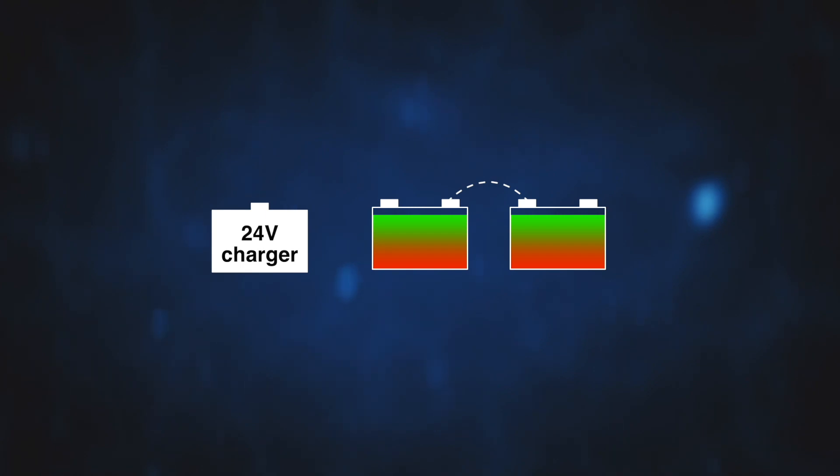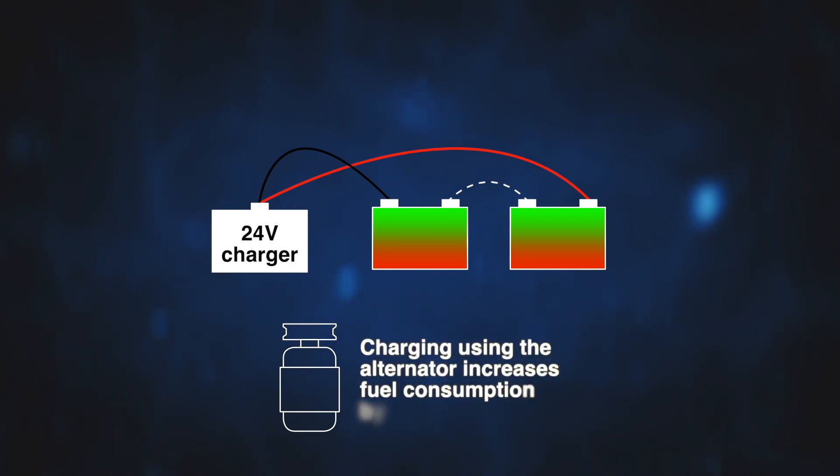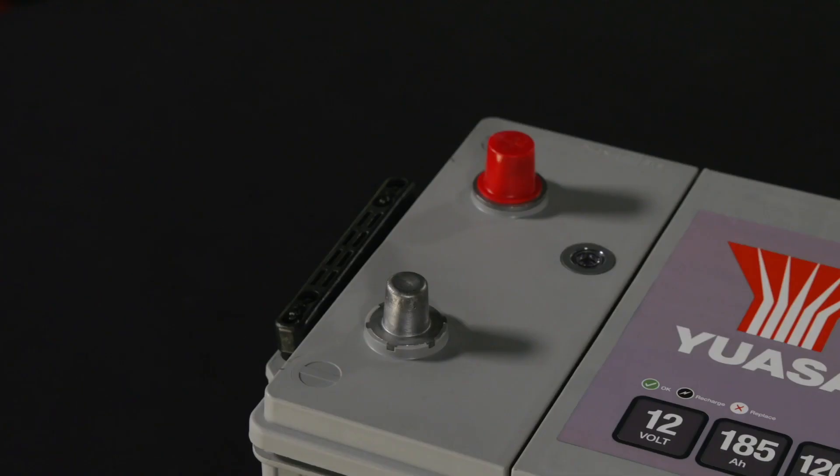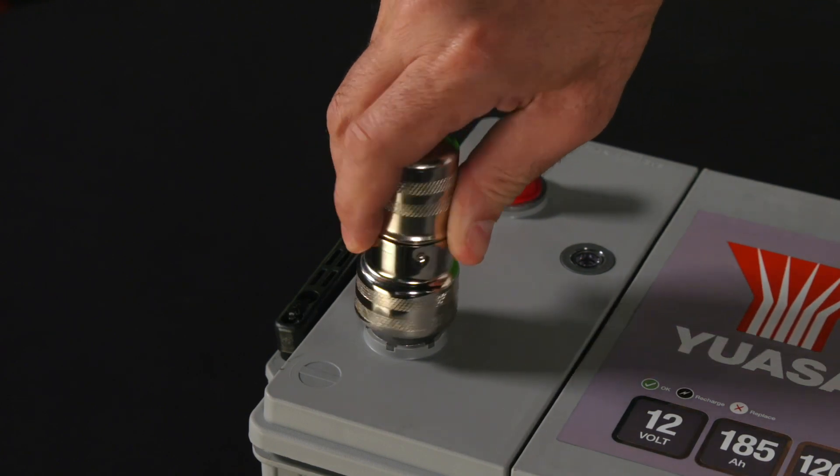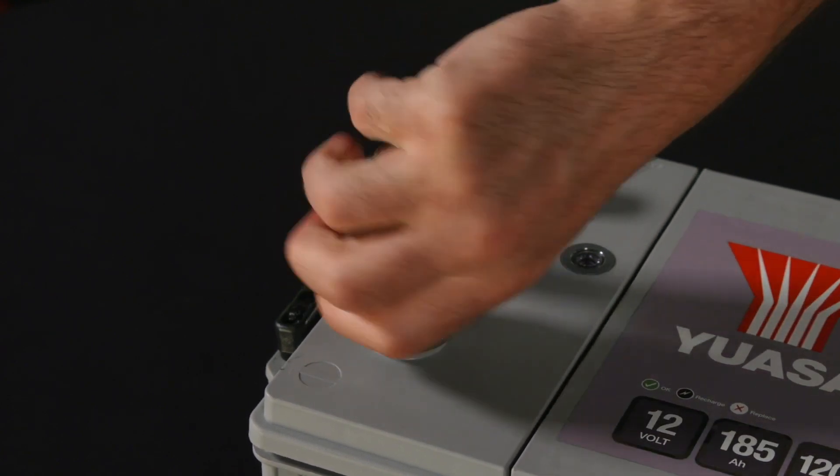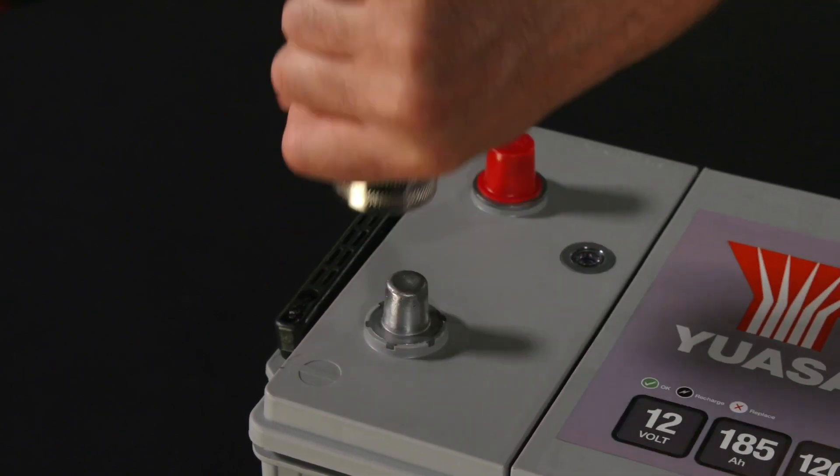Top charging batteries using an external charger also reduces fuel consumption as charging using the alternator increases fuel consumption by approximately 1.5%. Always check and keep battery connections clean to guarantee a good connection between the battery and the cable clamps.